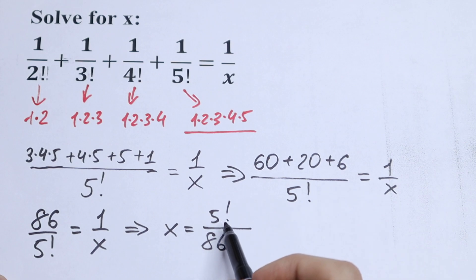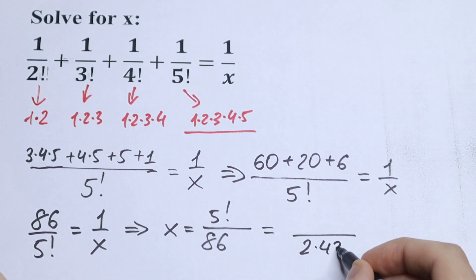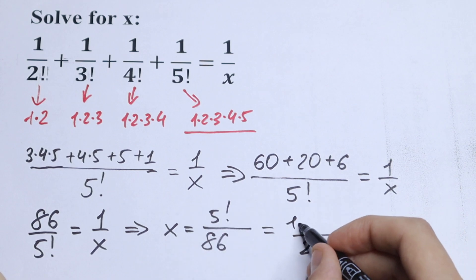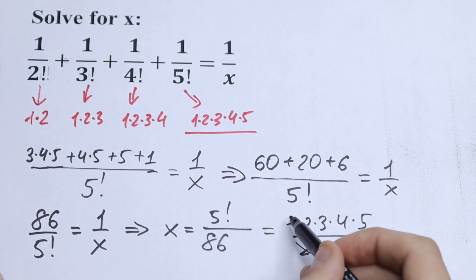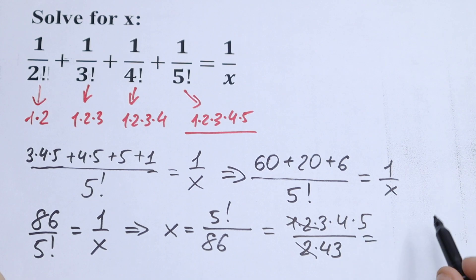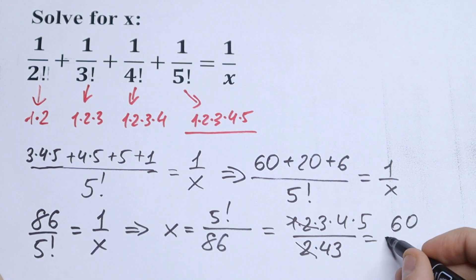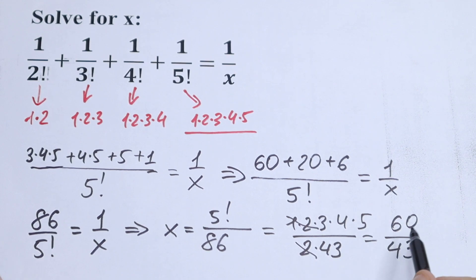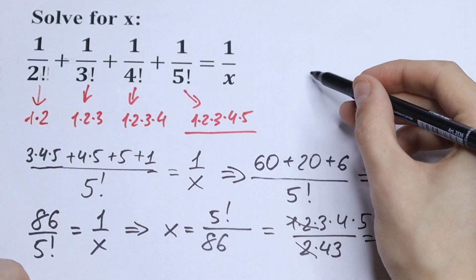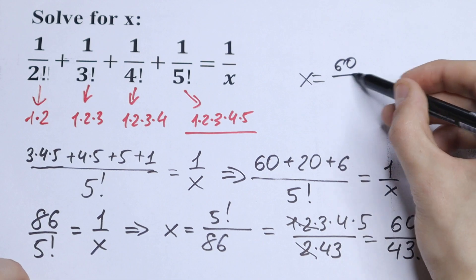Let's simplify this. We can write 86 as 2 times 43, and expand 5 factorial as 1 times 2 times 3 times 4 times 5. The 43 is not factorable against any of these terms, but we can cancel the 2 from 86 with the 2 in the factorial expansion. In the end we have 3 times 4 times 5, which equals 60, over 43. So x equals 60 over 43.